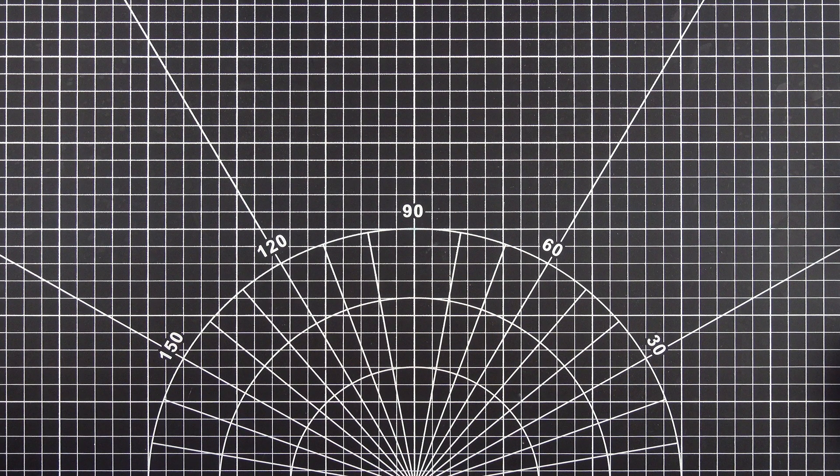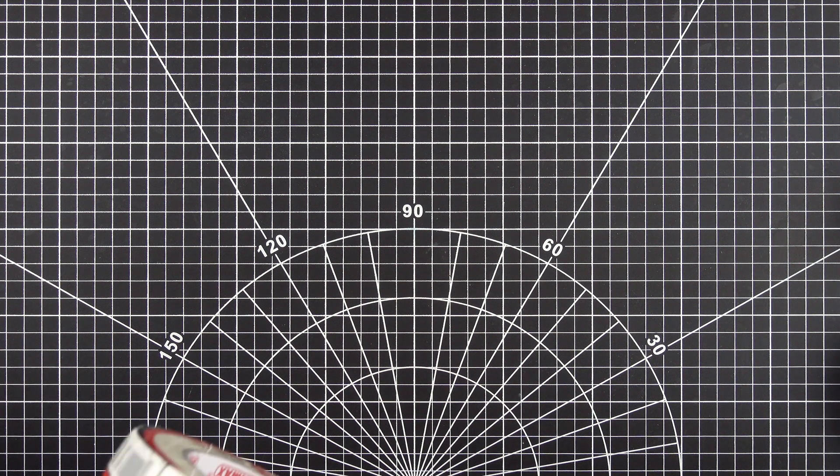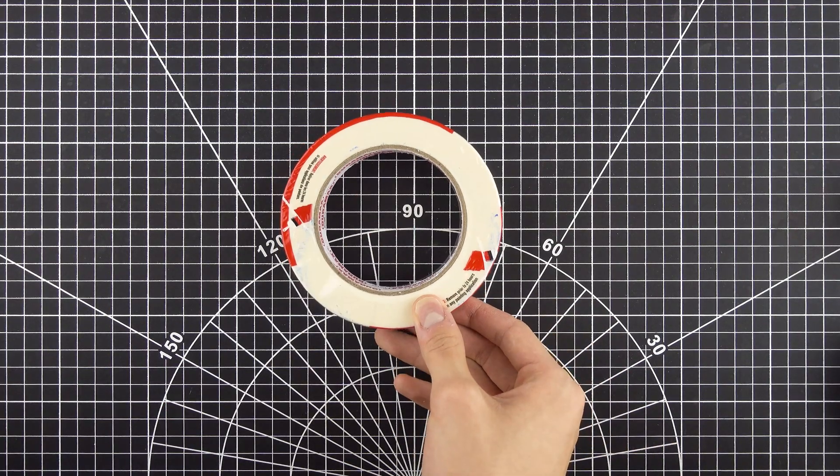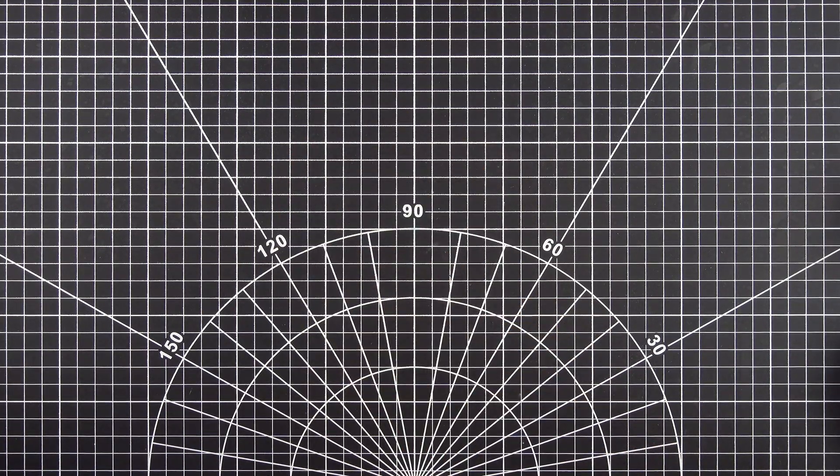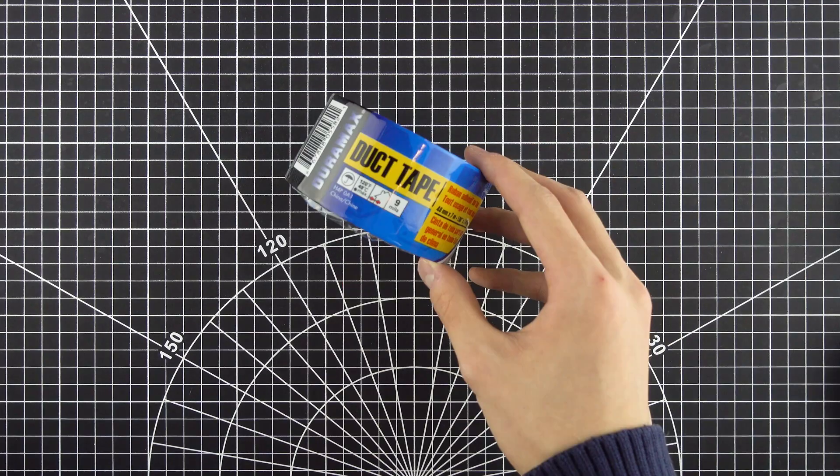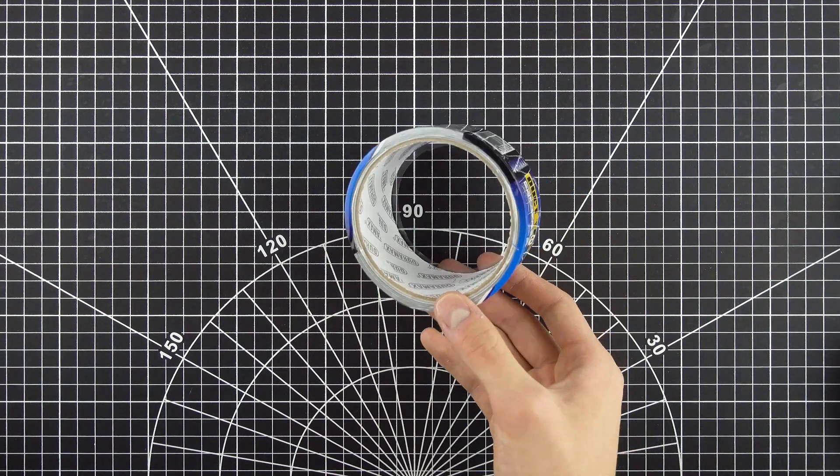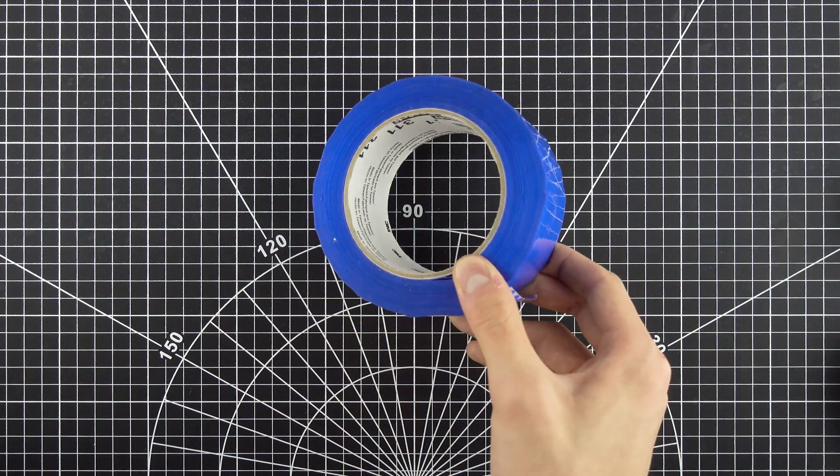To experiment with the different surface finishes, I got four types of tape. I have masking tape, vinyl electrical tape, duct tape, and this other type of tape that I'm not sure what the name of.